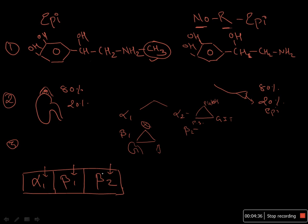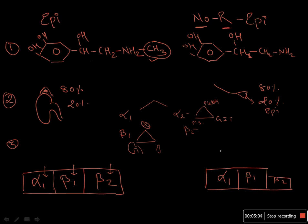Norepinephrine works equally on alpha one and beta one, but works very minimally on beta two receptors. So the major action of norepinephrine is on alpha one and beta one, with very minimal action on beta two. Norepinephrine mainly concentrates on constricting blood vessels, so it can increase blood pressure through alpha one action and can also improve cardiac condition.